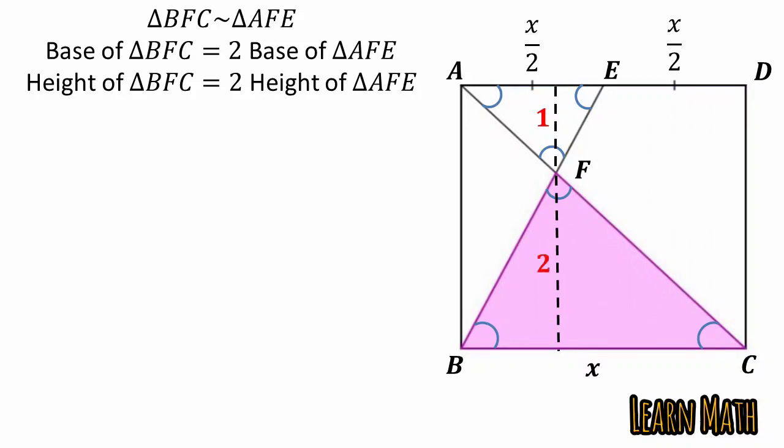So we can write height of the triangle BFC is equal to two by three of x, because the side of the square is equal to x. We know that area of the triangle BFC is equal to half of base into height.